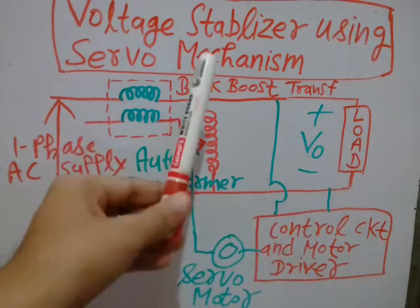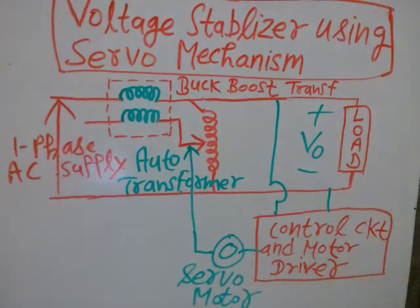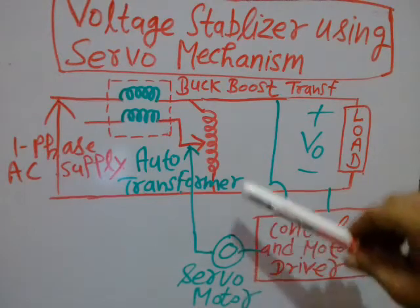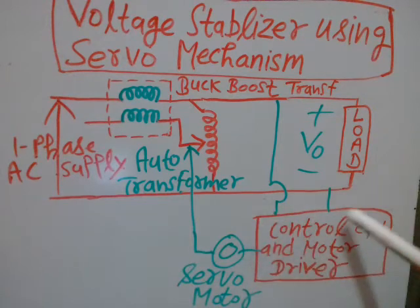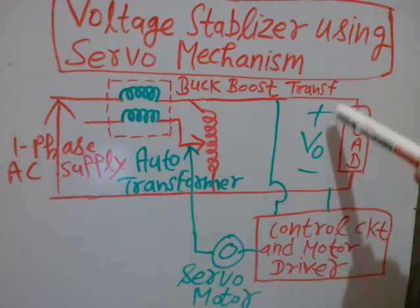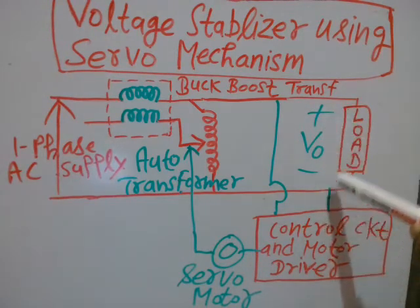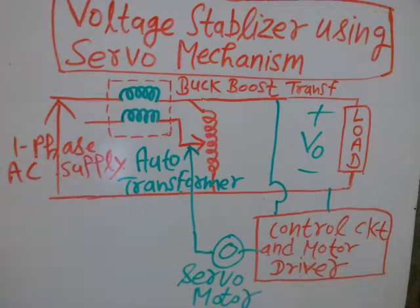In this schematic diagram, you can see the auto transformer, the servo motor circuit, the control circuit, the motor driver circuit, and the load connected here. The voltage across this load is denoted by V0, and this is the voltage that is to be stabilized.